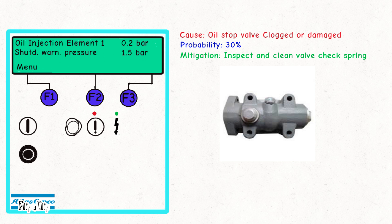Also, check the condition of the spring inside the valve. To avoid future issues, inspect the oil stop valve every 1,000 hours of operation. Regular maintenance of the oil stop valve helps ensure it functions properly, preventing oil injection problems.